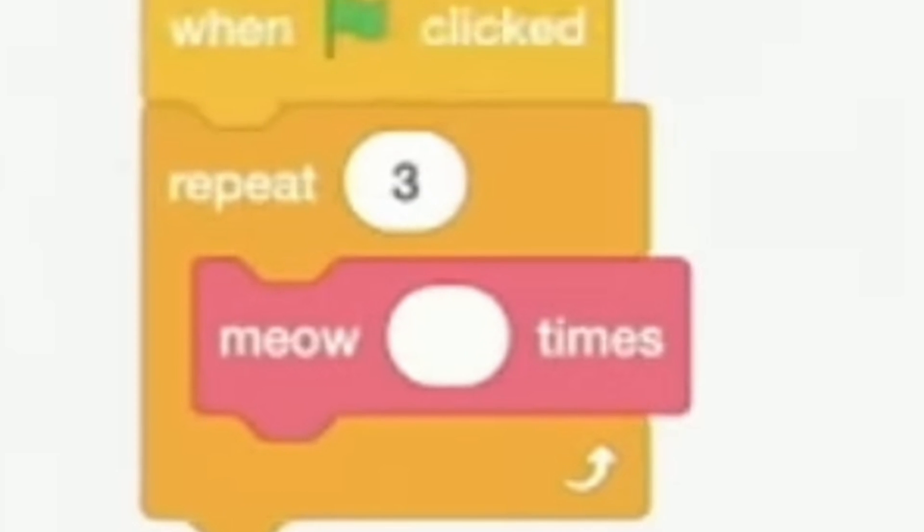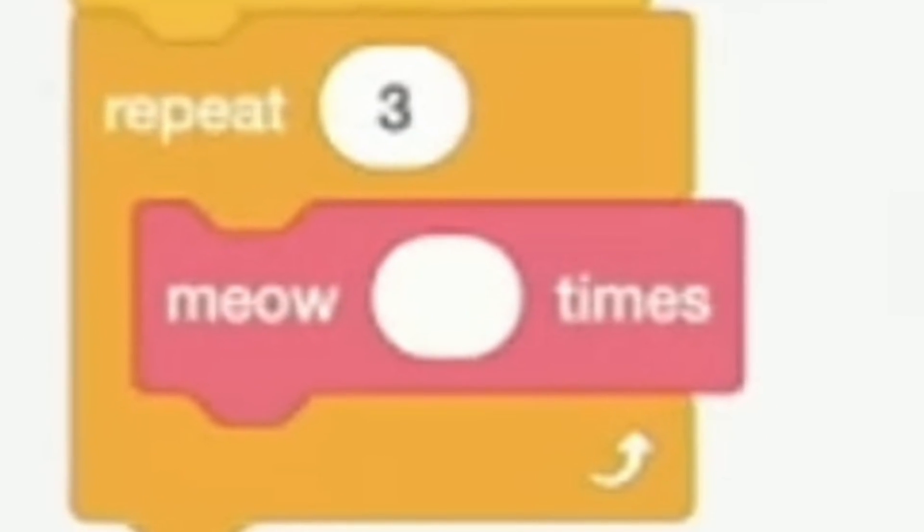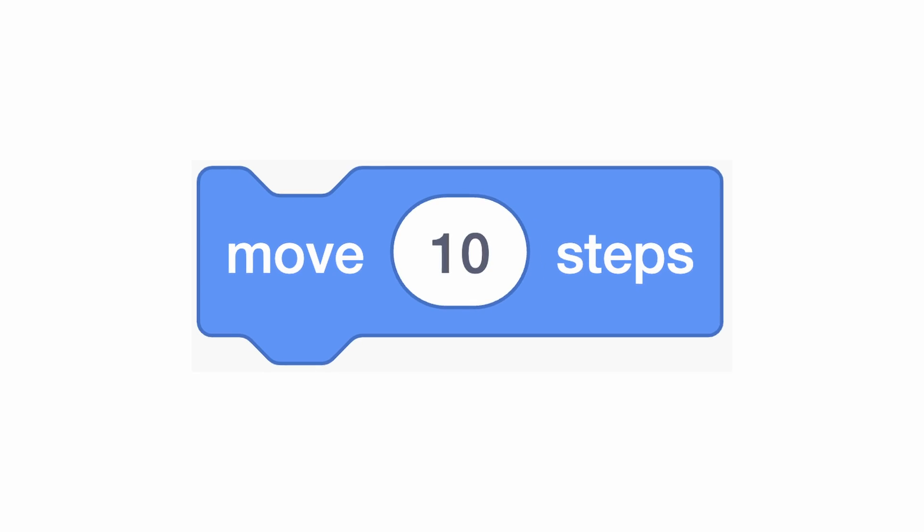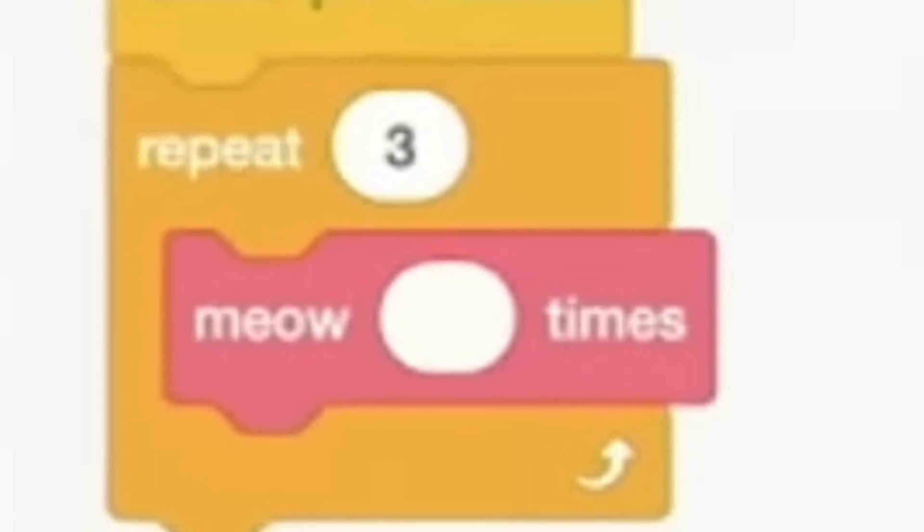This adds a white bubble to the custom block whenever you use it, making it identical to many of the default Scratch blocks. And just like the default Scratch blocks, the custom block now has a parameter.